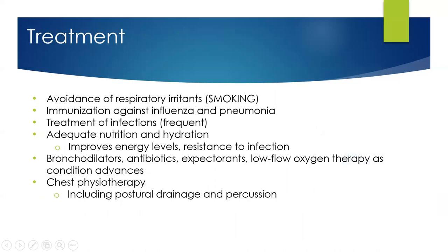The chronic bronchitis treatment plan is similar to emphysema — number one is smoking cessation. Immunization is important. Treatment of infections, adequate nutrition, bronchodilators, and antibiotics are all key. The difference in medications for chronic bronchitis may include expectorants, like Mucinex, to help patients cough the mucus up and out — which differs from emphysema. Oxygen administration must be watched carefully in both conditions given the hypoxic drive.